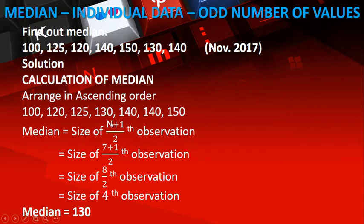For individual data, N is the count of values. Counting: 1, 2, 3, 4, 5, 6, 7. So N is 7. The number of values is odd, so it is (7+1)/2 item.